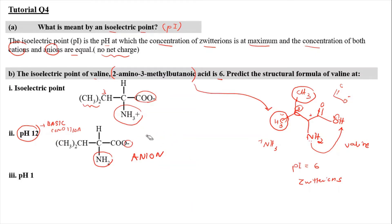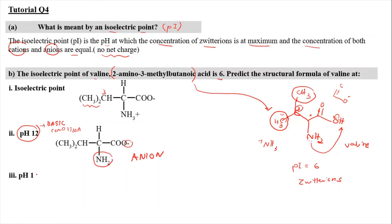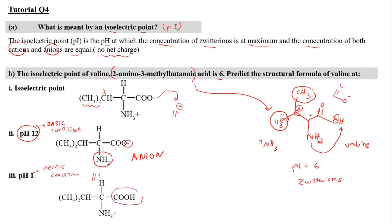For situation 3 at pH 1, we have acidic conditions, meaning H+ ions are present. The H+ is taken up by the COO− group to form COOH. The rest of the structure is unaffected. As a result, the overall charge is positive, making it a cation. So that's all for this video — see you again some other time. Bye.